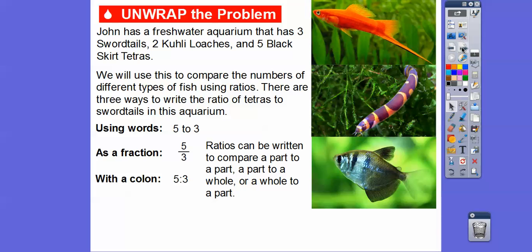Ratios can be written to compare parts to parts — we compared parts to parts here. Or we can do a part to a whole; there's 10 fish in the aquarium, so we can use 10 as the whole. Or we can do the whole to a part — the whole aquarium to any one of the parts right there.